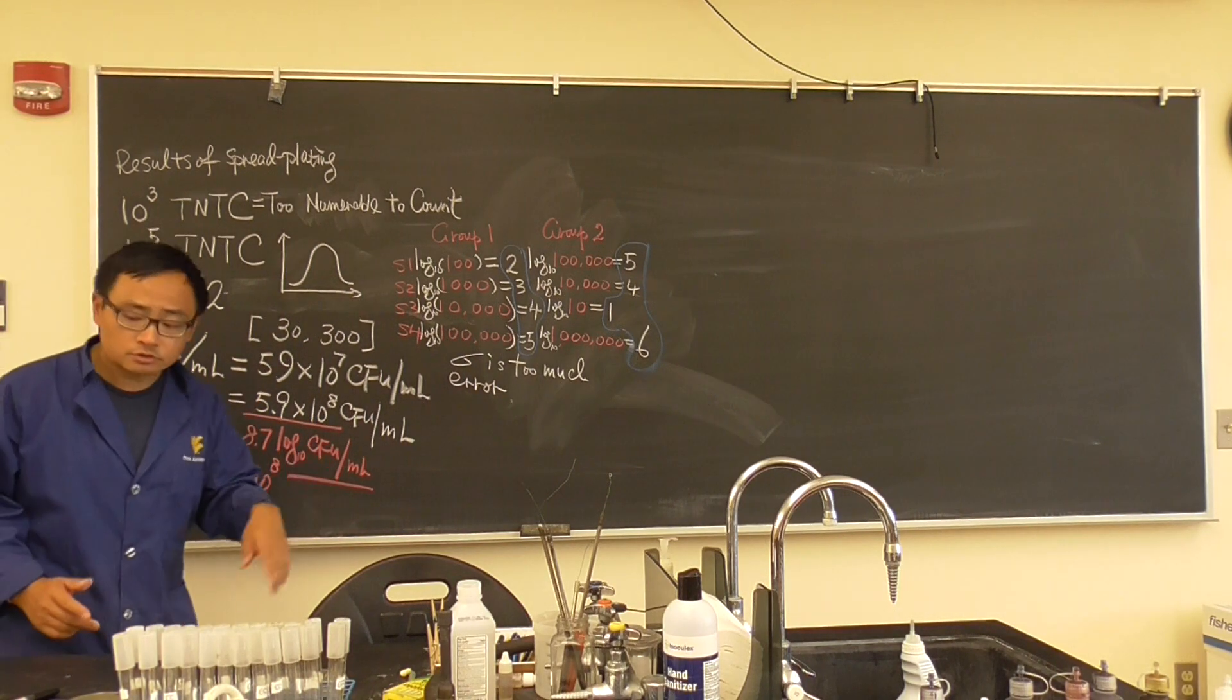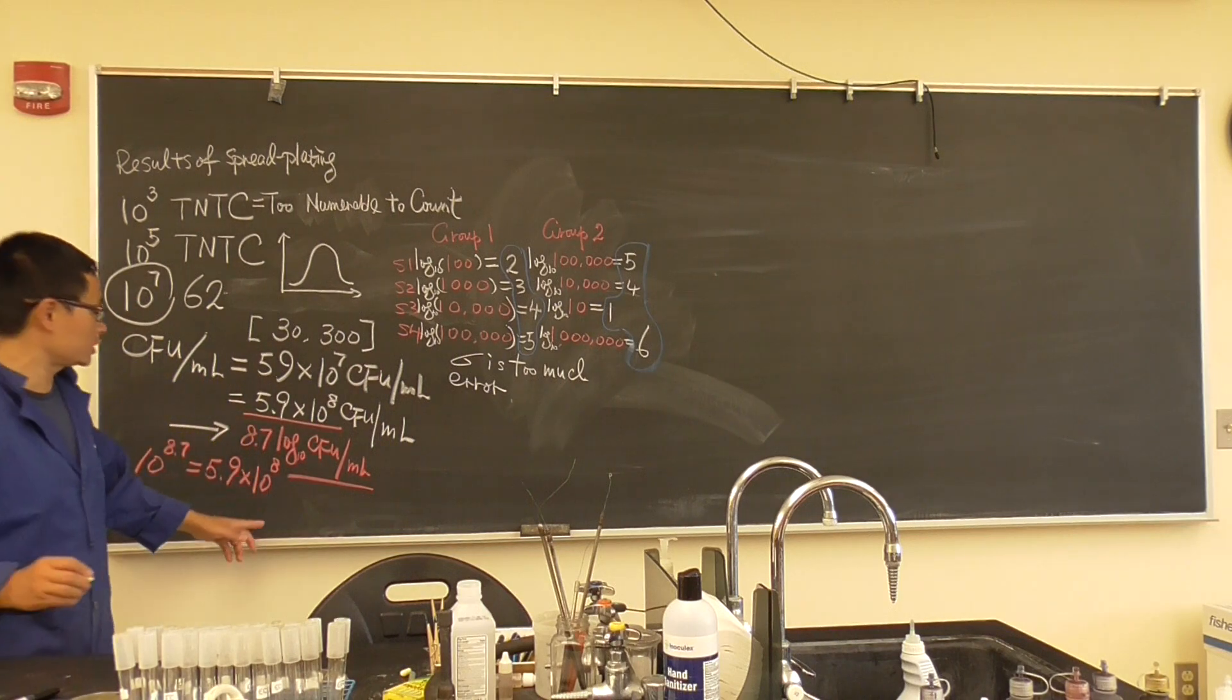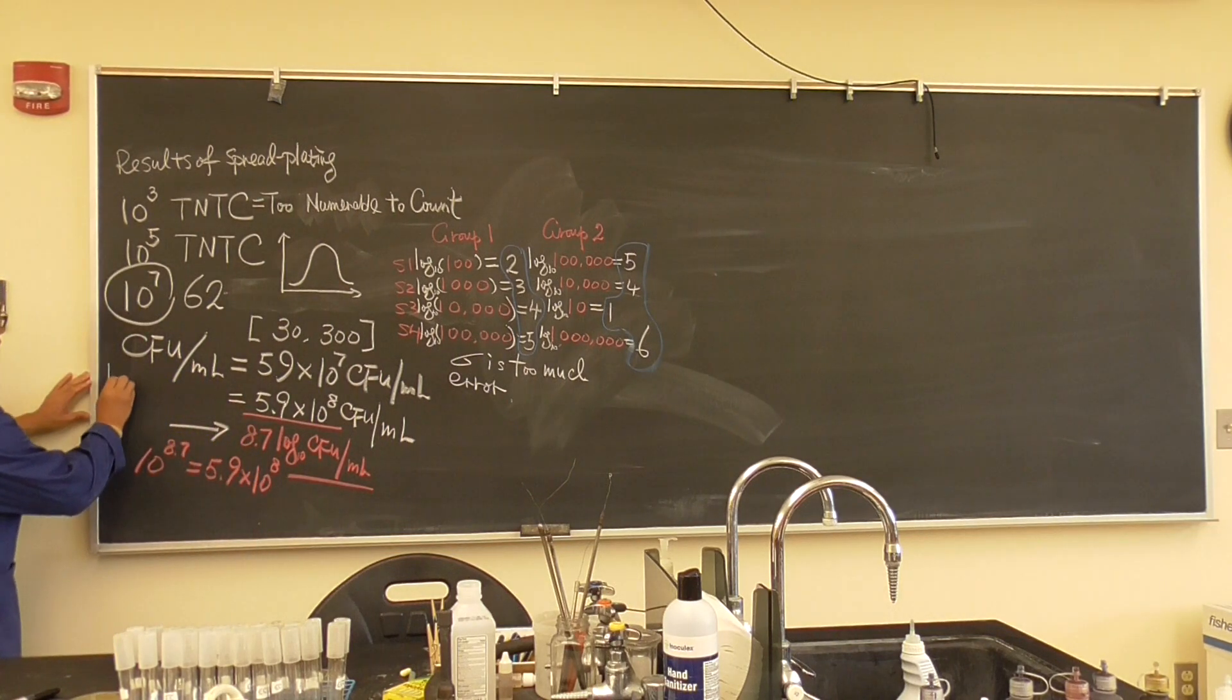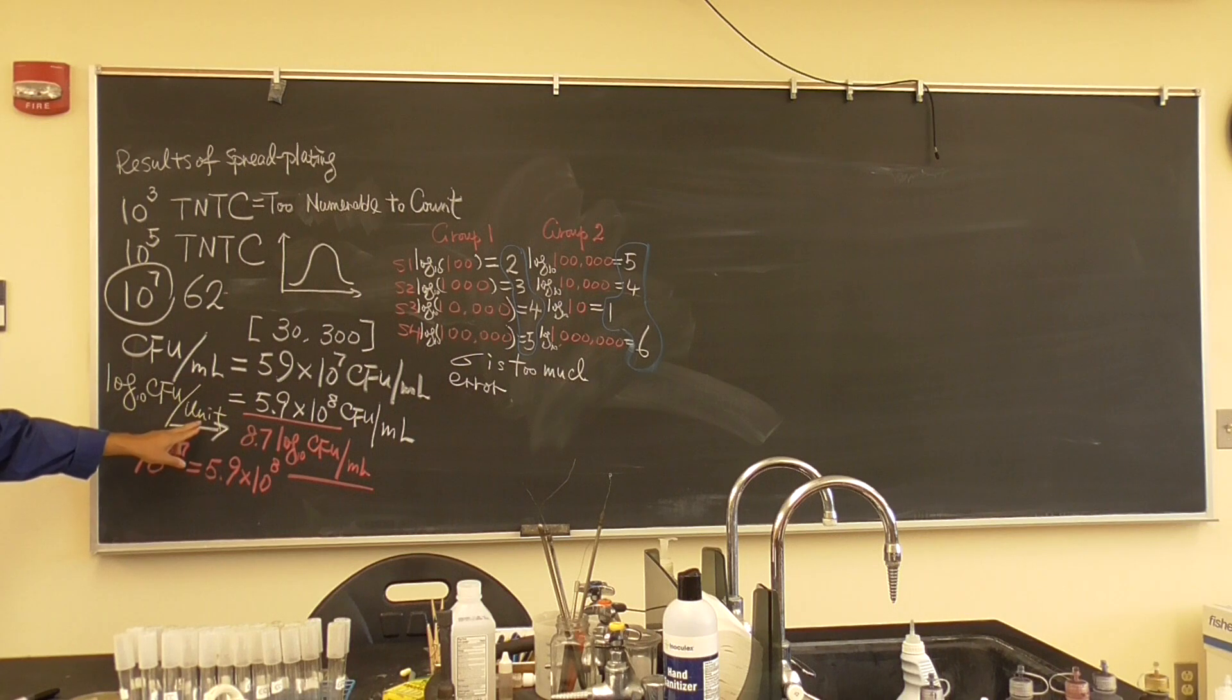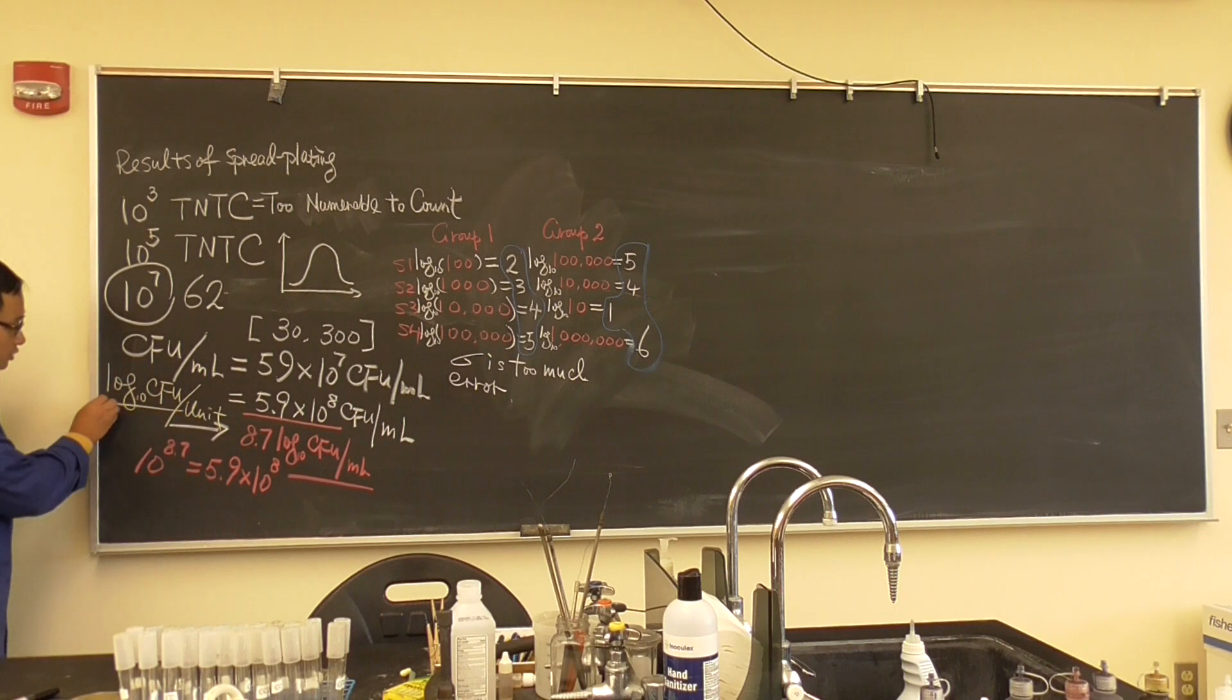Bacterial population, most of the time, we transfer them to log 10 CFU per unit. That could be per ml, could be per gram, could be per apple, per poultry. It depends. That's the reason we have to change to its log 10.